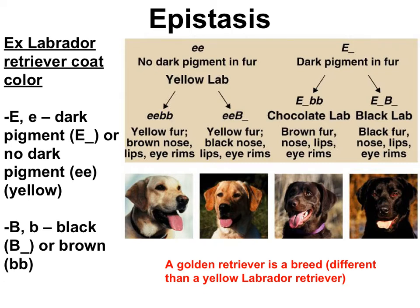The E locus controls the ability to have dark pigment in Labradors, and having dark pigment is dominant to not having pigment. If a Labrador retriever has little e little e, it will be a yellow lab no matter what's going on at the B locus. The B locus controls which dark pigment is made — black is completely dominant to brown. If the E locus is homozygous dominant or heterozygous, the B locus determines coat color: a brown lab is called a chocolate lab, and a black one is just called a black lab.